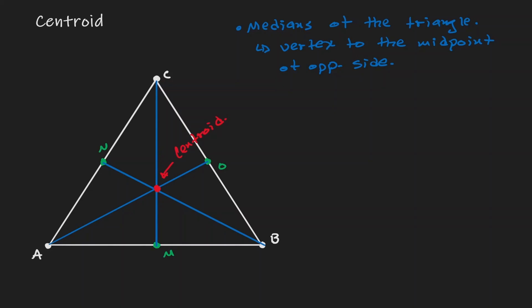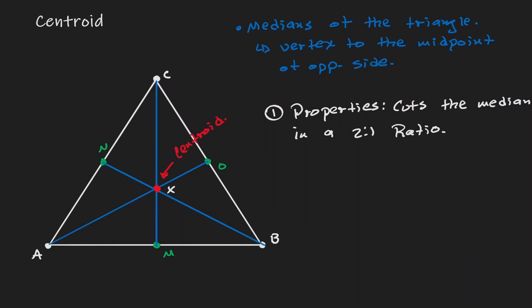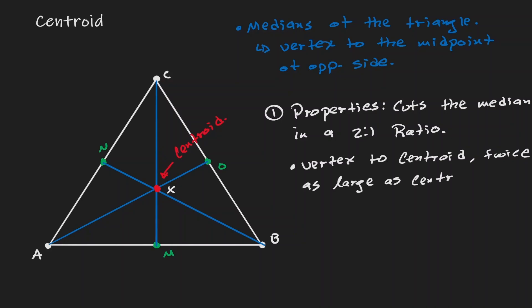This intersection is what we refer to as the centroid of our triangle. Let's call this point X. The centroid cuts the median in a 2 to 1 ratio: the distance from the vertex to the centroid will be twice as large as the distance from the centroid to the side of the triangle.